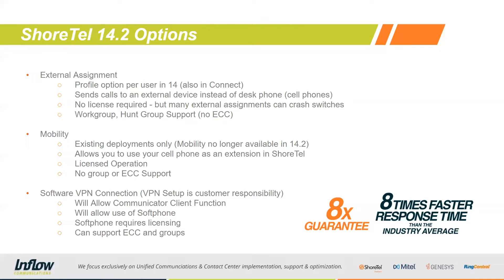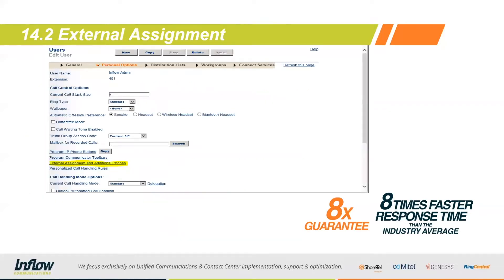Now we'll go through a couple of boxes you need for External Assignment. There are a couple of prerequisites for setting up External Assignment in 14.2 as well as Connect. First, in the user groups you are setting up, under the telephony class of service, you need to make sure that 'Allow External Assignment' is enabled — otherwise these options will not be available. You can see I'm on a user, on the Personal Options tab, and highlighted below is a hyperlink for External Assignment and Additional Phones. This takes you to the configuration screen for this.